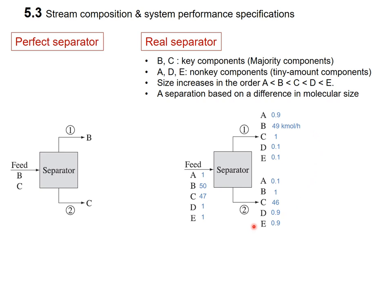Let's go to the second stream. We still have all of C there, but C is dominant in stream 2. A, B, D, and E are present at very tiny levels. So the point is that in stream 2, you find high purity of the C component, separated from the other majority component B, with some still remaining impurities.